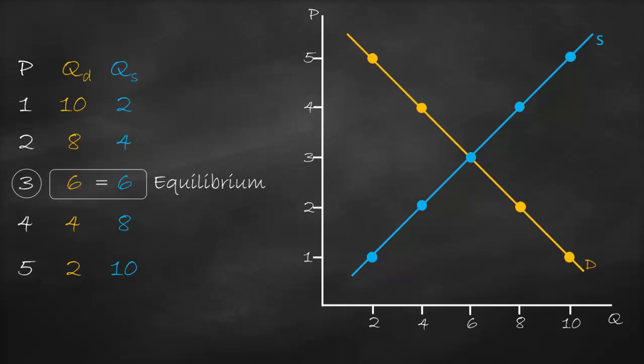Can we get the equilibrium from the graph? Yes — if you look at where the supply curve and demand curve intersect, it will be the point where equilibrium price equals 3 and equilibrium quantity equals 6. So we can find the equilibrium either from the table or from the graph.